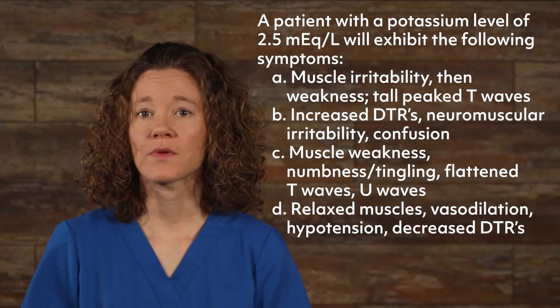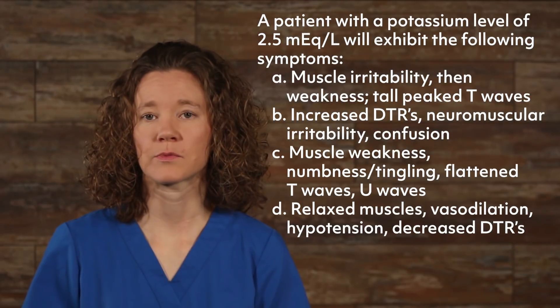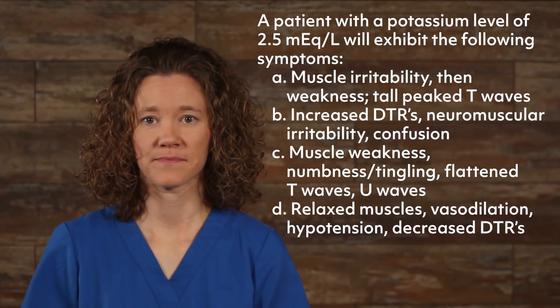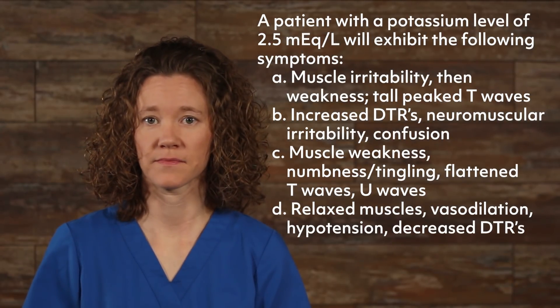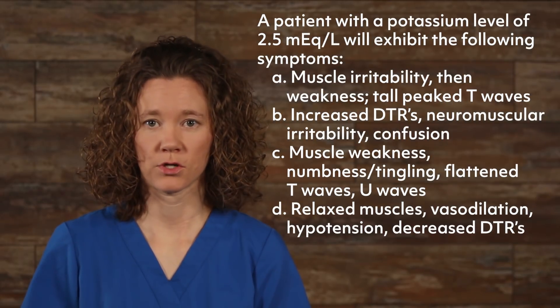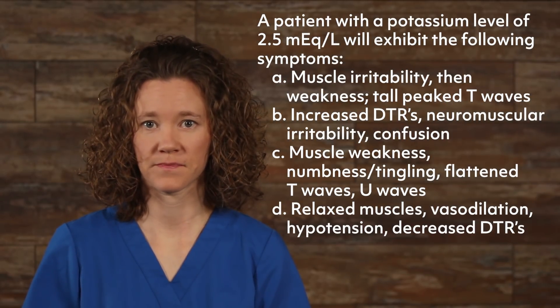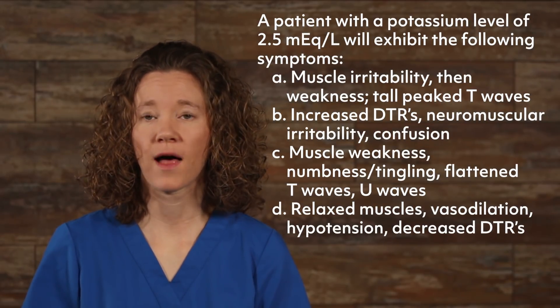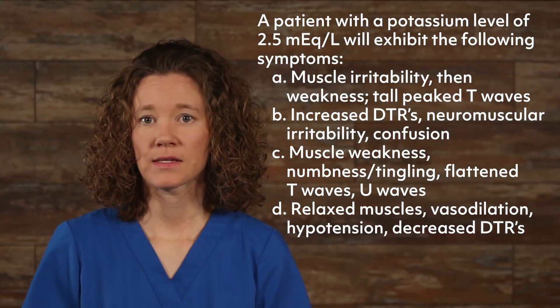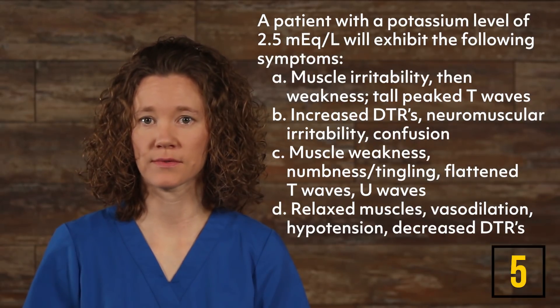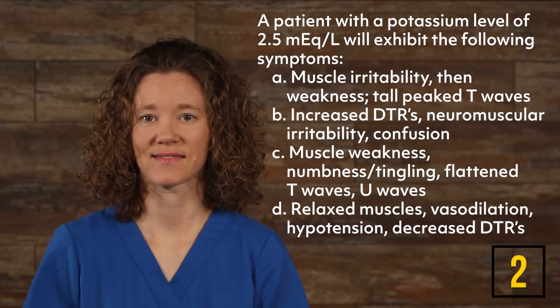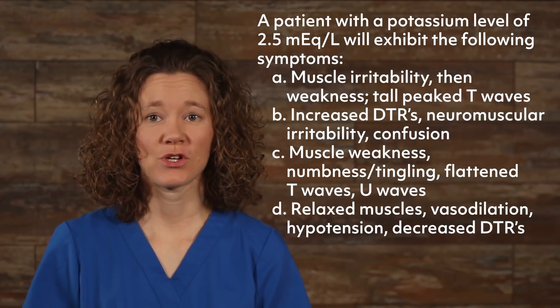Here's another one. A patient with a potassium level of 2.5 mEq per liter will exhibit the following symptoms. A — muscle irritability, weakness, tall peaked T waves; B — increased DTRs, neuromuscular irritability, or confusion; C — muscle weakness, numbness and tingling, flattened T waves, U waves; D — relaxed muscles, hypotension, decreased DTRs. If you chose C, you're correct. Muscle weakness, numbness and tingling, flattened T waves, and U waves are all symptoms of hypokalemia.